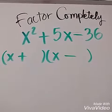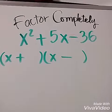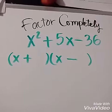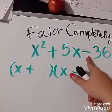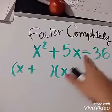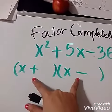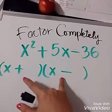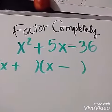Factor completely x² + 5x - 36. Okay, first thing you have to do is take a look at the sign right here. Here I have a subtract, that means they're going to have the opposite signs. Your factors will have the opposite - one plus and one minus. All right, let's take a look at how to factor.